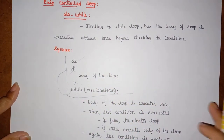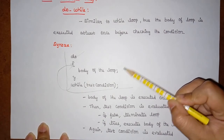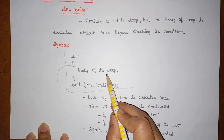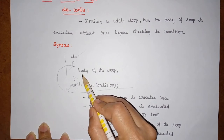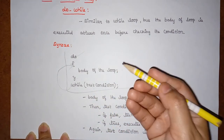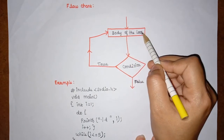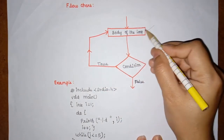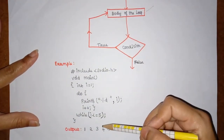The steps in do-while execution are: first, the body of the loop executes one time; then the test condition is evaluated. If the condition is true it executes the body again, otherwise it terminates the loop. This continues — execute body, check condition — until the condition becomes false. In the flowchart, the body executes first, then the condition is checked; true loops back, false terminates.